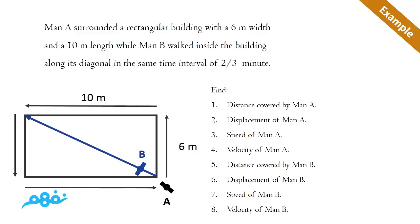thirds of a minute. So you have to find: the distance and displacement covered by Man A, the speed and velocity of Man A, and for Man B, the distance, displacement, speed, and velocity. To work well with this question, you have to know